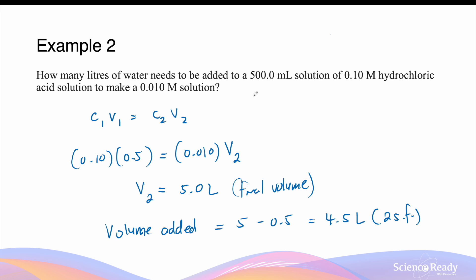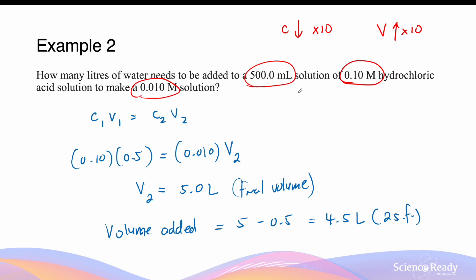Another way to approach this dilution question is to recognize that the original and diluted concentrations differ by a factor of 10 — the concentration is 10 times smaller than the original. To achieve this during dilution, if we want the concentration to decrease by 10 times, we want the volume to increase by 10 times, because the two are inversely proportional. So we increase the original volume of 500 mL by 10 times to get 5,000 mL, which equals 5 liters — the same answer of V2 = 5.0 L.